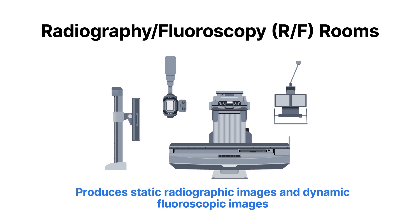The equipment in an RF room is fixed and does not leave the room. These systems include an x-ray tube, table, table bucky, image intensifier or flat panel detector, and an upright bucky.